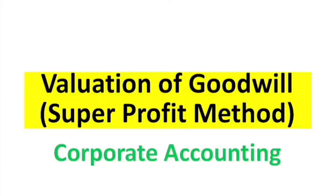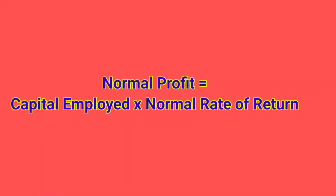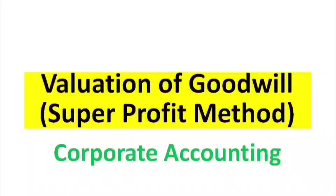So the key formula involves: average profit minus normal profit, where normal profit equals capital employed multiplied by the normal rate of return. The result is the super profit, which is then multiplied by the number of years of purchase.